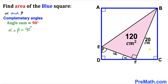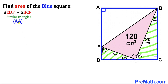Now focusing on right triangle FCB: we identify angle alpha, and since there is a 90-degree angle, the other angle must be beta. And since this angle is also 90 degrees, the remaining angle is alpha. Therefore, right triangle EDF is similar to right triangle BCF by the Angle-Angle similarity theorem.